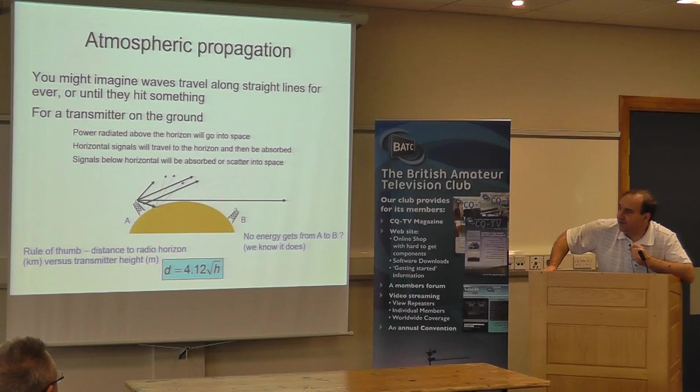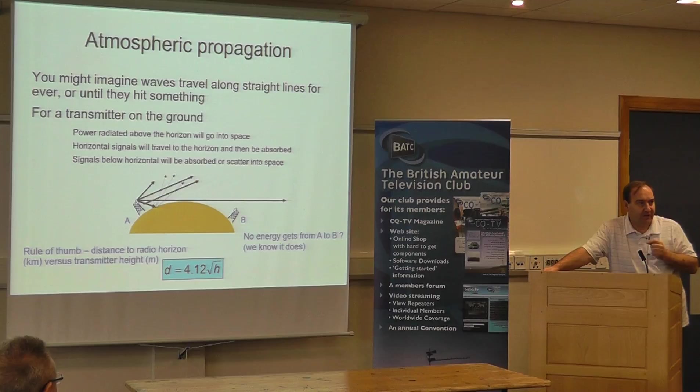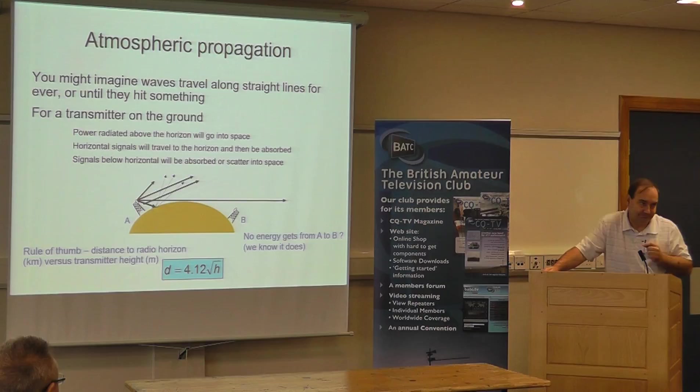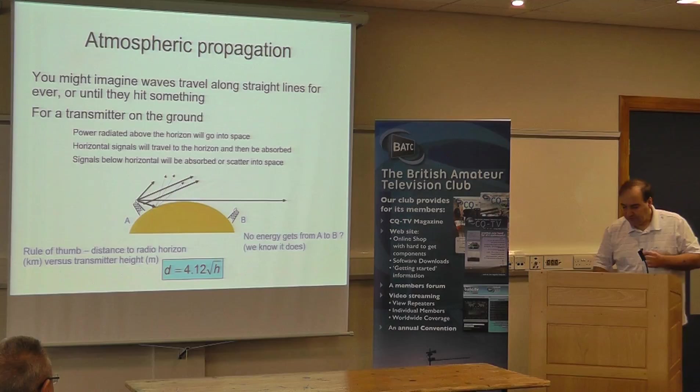Actually, it's not quite line of sight. For radio signals, it's actually about four thirds of line of sight. The distance to the horizon — which gives you an idea of your line-of-sight range — is 4.12 times the square root of your height. That's the distance you'll get to your horizon. If someone is at the other side and at a similar height, you'll get twice that. But that's not very far — the horizon is quite close in most cases.